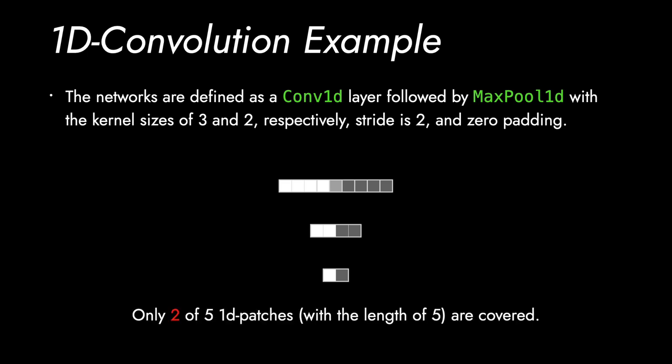If we consider every one dimensional patches with the length of 5, this naive forwarding only covers 2 of 5 patches. This is because striding in the consecutive layers prevents to extract dense features for sliding input patches.